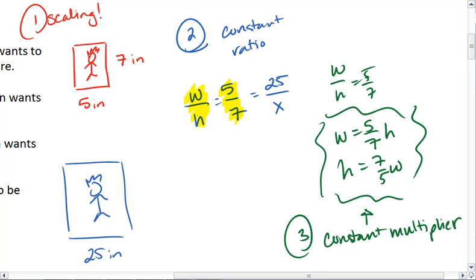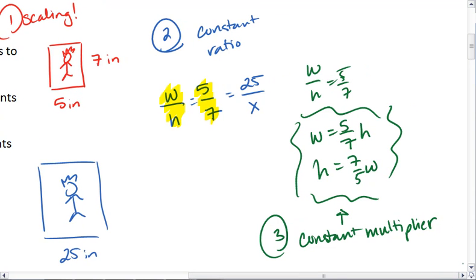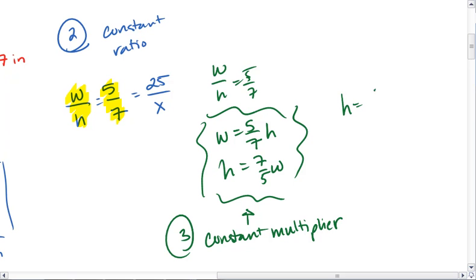Because we can either multiply the height by 5 sevenths to get the width, or we can multiply the width by 7 fifths to get the height. Since we have the width, we could say that the height equals 7 fifths times 25, which equals 35.